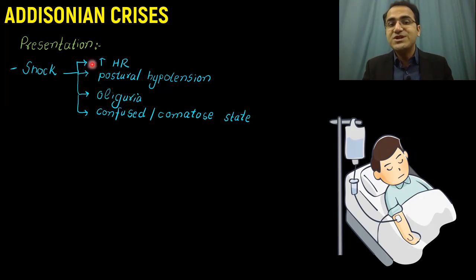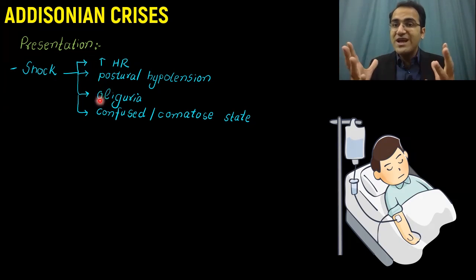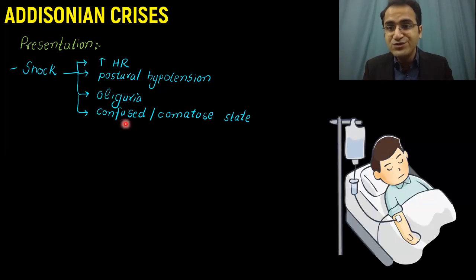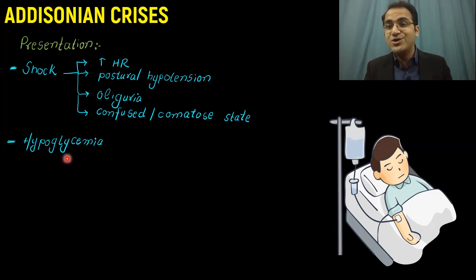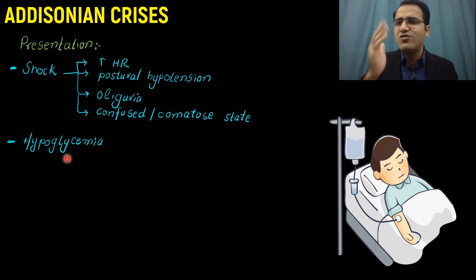The patient will also have increased heart rate, since with hypotension the heart pumps more to maintain blood pressure, resulting in tachycardia. There is oliguria since in a shock-like situation the kidneys are not receiving enough blood, resulting in very little urine production. The patient will also be confused and comatose. Additionally, the patient can develop hypoglycemia due to the lack of cortisol, which leads to lower fasting glucose levels.